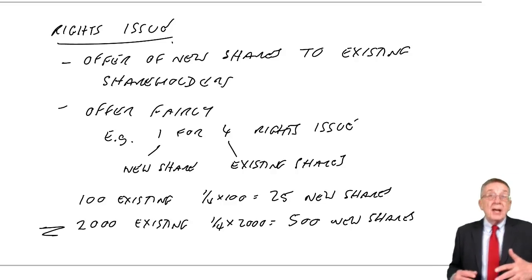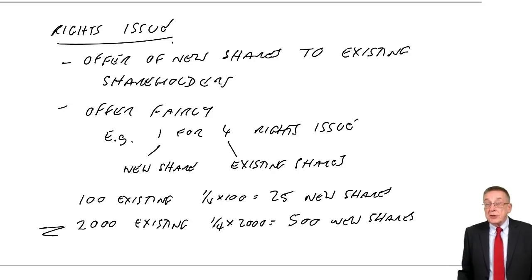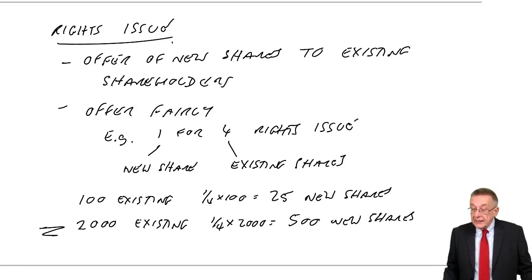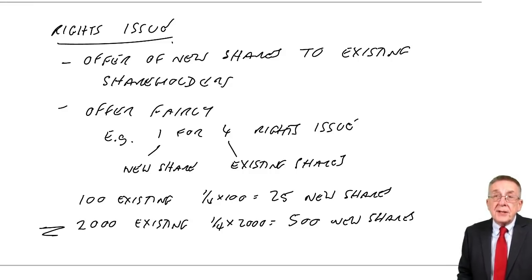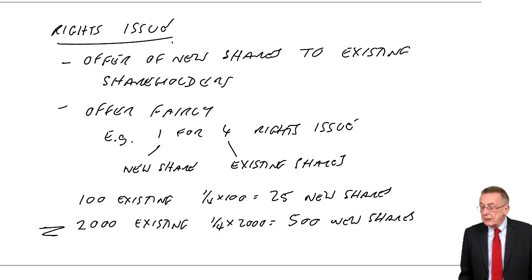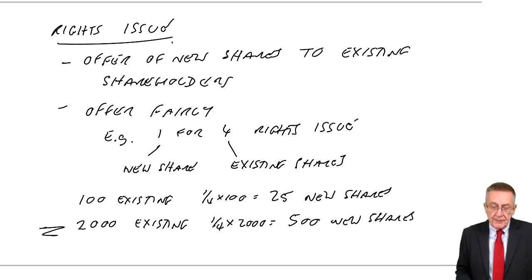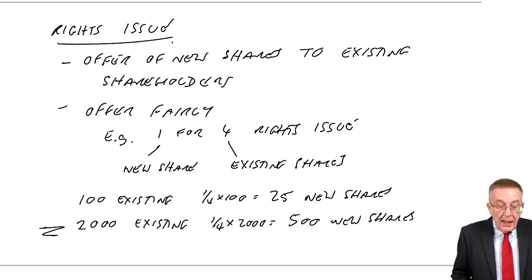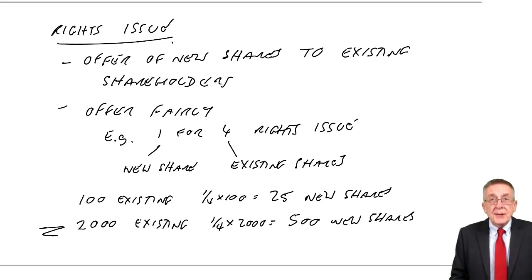A rights issue is a lot cheaper and quicker than having a public issue. It depends on how much money you're trying to raise — if you need millions, you may not get that from existing shareholders alone and might need a public issue. That said, the approach depends heavily on how big the company currently is. That covers quoted companies issuing new shares.